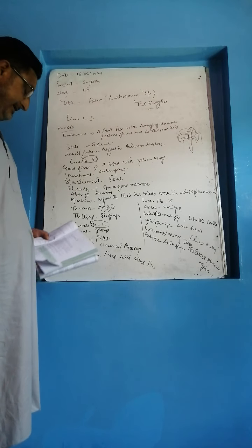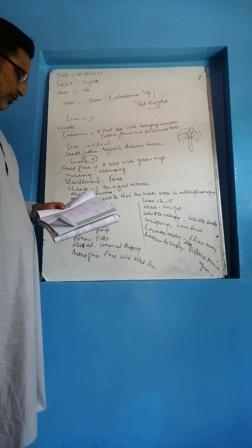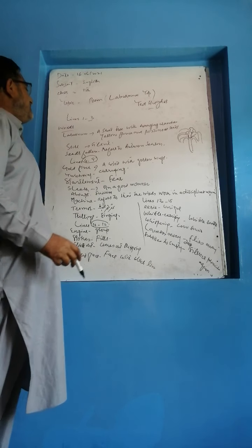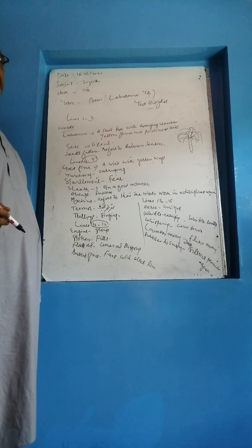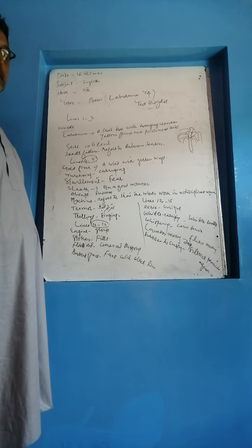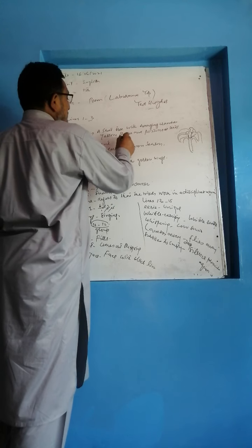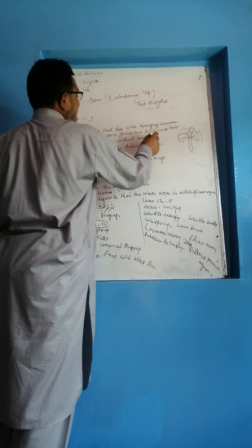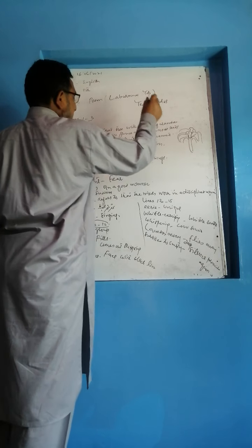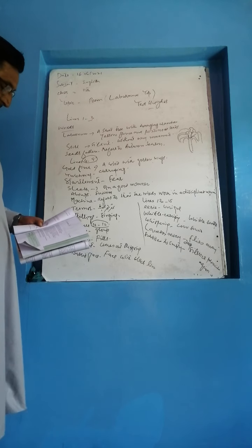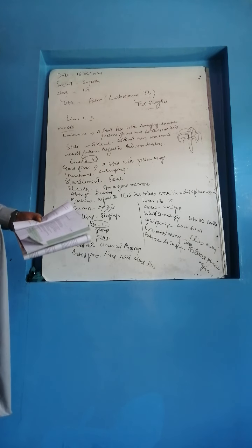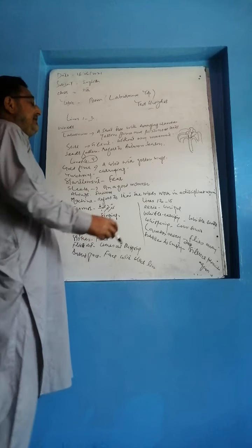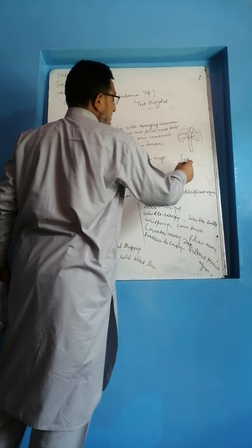He says that the Laburnum Top is silent, quite still. Still means silent, without any movement. In the afternoon yellow September sunlight, the poet describes September, which is the season of autumn.